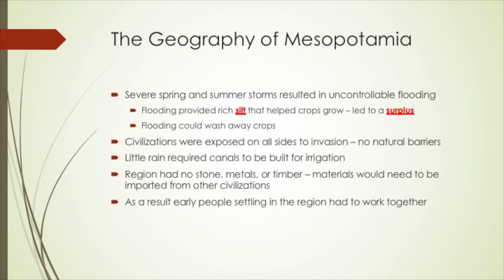In addition, there was very little rainfall in the region, which required civilizations to build large canals to bring water from the Tigris or Euphrates river further inland for farming. Finally, there were many resources not available in this region — very little stone, metal, or timber — and these materials had to be imported from other nearby civilizations. As a result, many people settling in the region had to work together to survive.